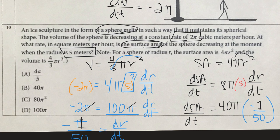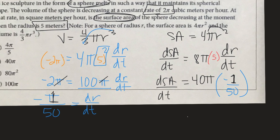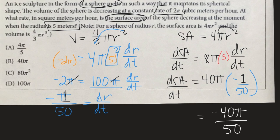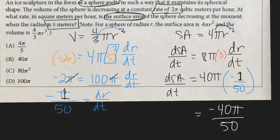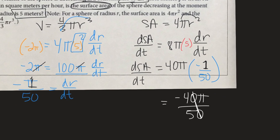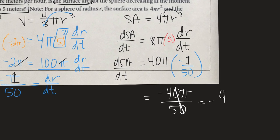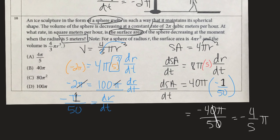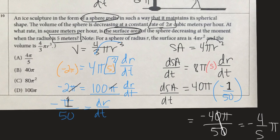So I'm gonna get, let's see, -40π/50 is going to be my answer to this, which can simplify, right? The 40s and the 50s can cancel out, giving me a -4/5π. Okay, so my surface area is decreasing at a rate of 4/5π.